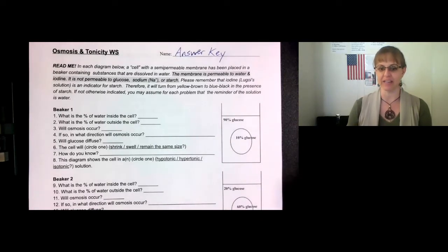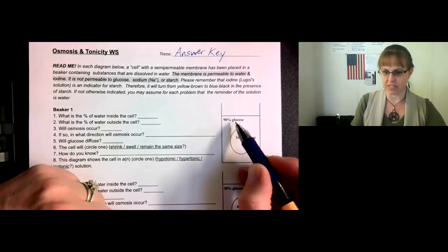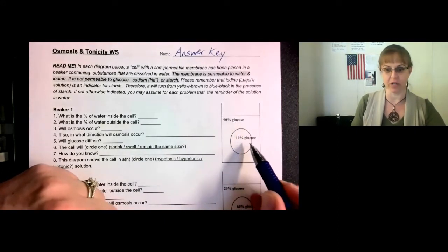Please remember that iodine, or Lugol's solution, is an indicator for starch. Therefore, it will turn from yellow-brown to blue-black in the presence of starch. If nobody says otherwise, you may assume for each problem that the remainder of the solution is water. So for beaker number one, we have 90% glucose in the beaker and 10% glucose in the cell.